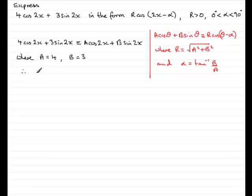So, therefore, by what we have over here, r will be equal to the square root of a squared plus b squared. So, in other words, the square root of 4 squared plus 3 squared. Work that out, and we've got 16 plus 9, 25, square root of 25, which is 5.